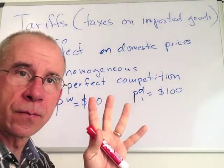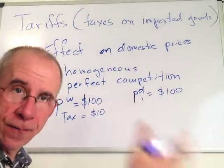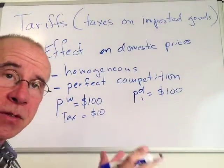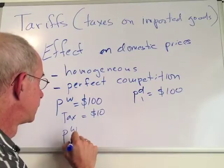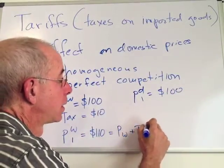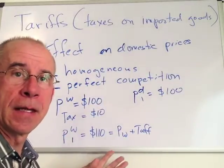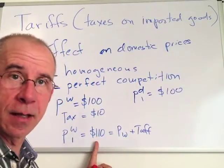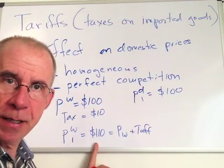If the domestic firm convinces the government to put a tax of $10 on the foreign good while leaving the domestic price alone, then a foreigner, seeing this tax, will charge $110 — which is the world price plus the tariff. A domestic firm, seeing this, is going to say: I don't have to worry as much about foreign competition. Foreigners are charging $110 and I'm charging $100, so I can raise my price a little bit.